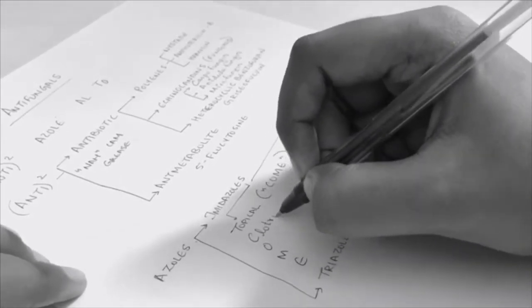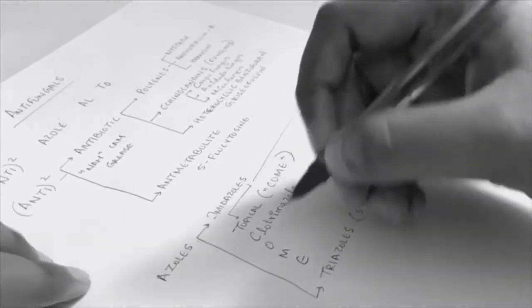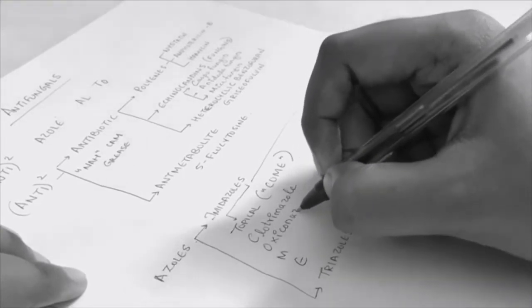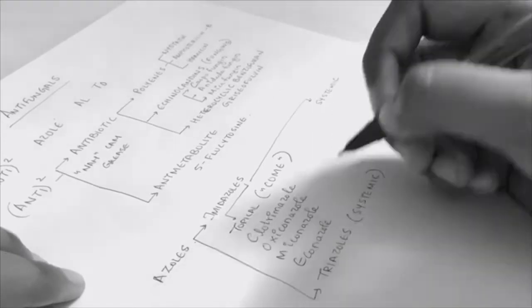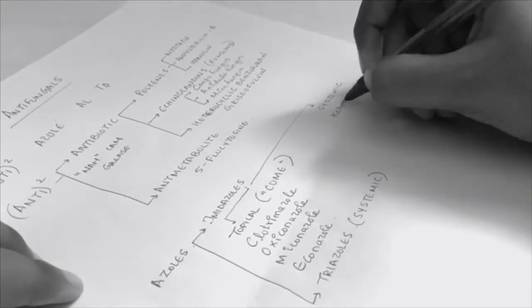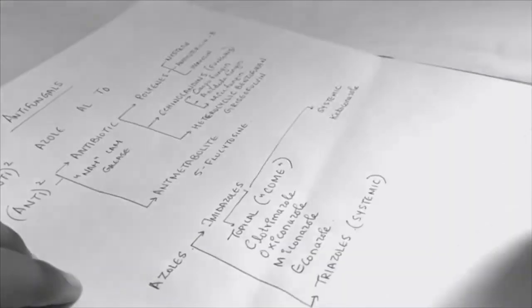C for clotrimazole, O for oxyconazole, M for miconazole, E for econazole. The systemic one is the one and only ketoconazole.